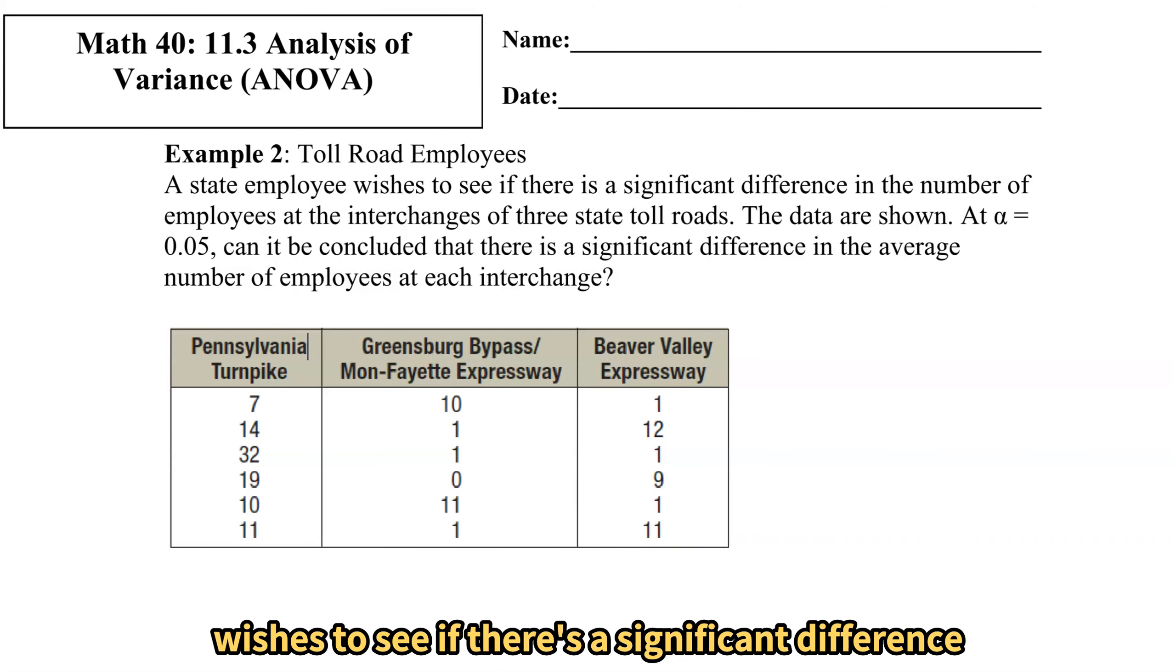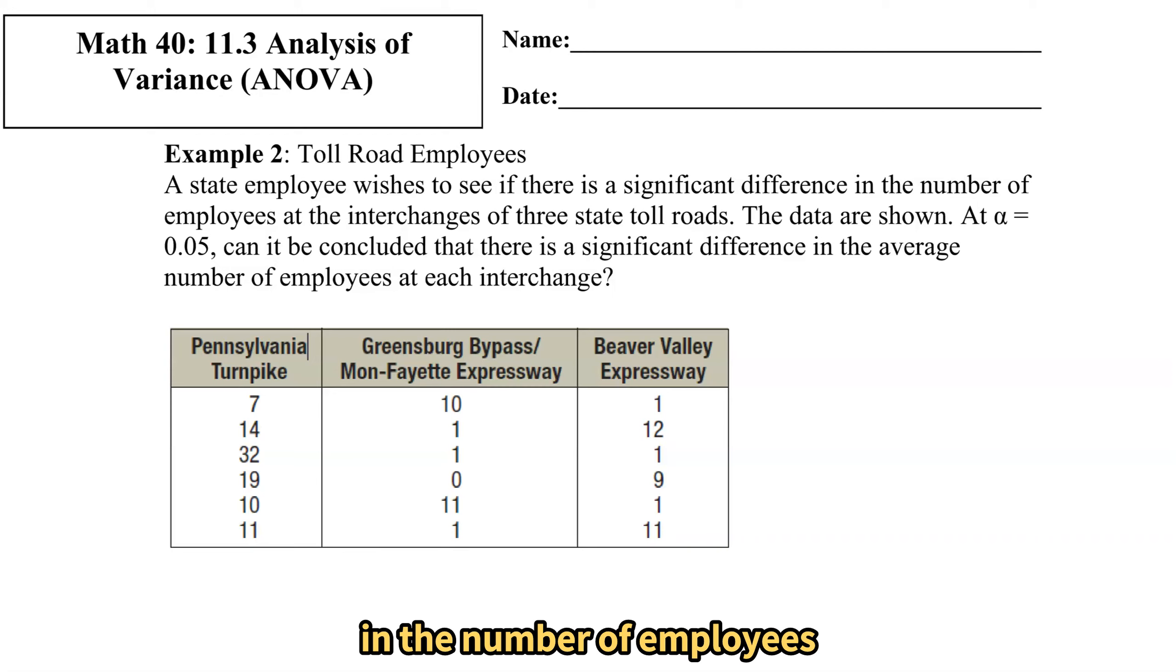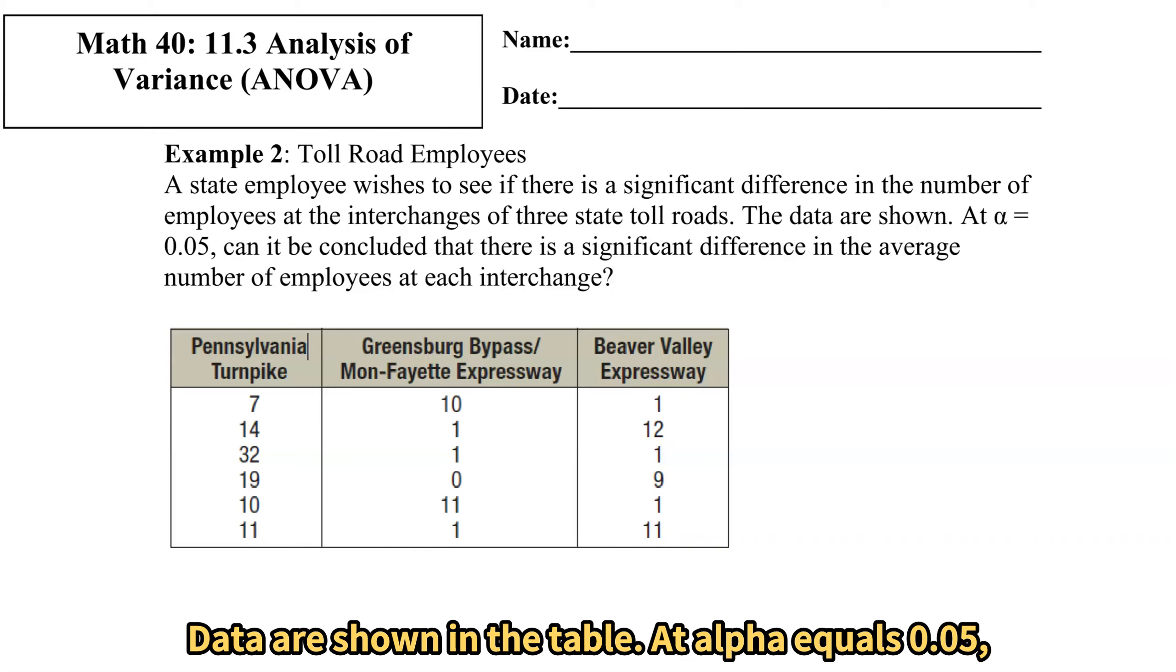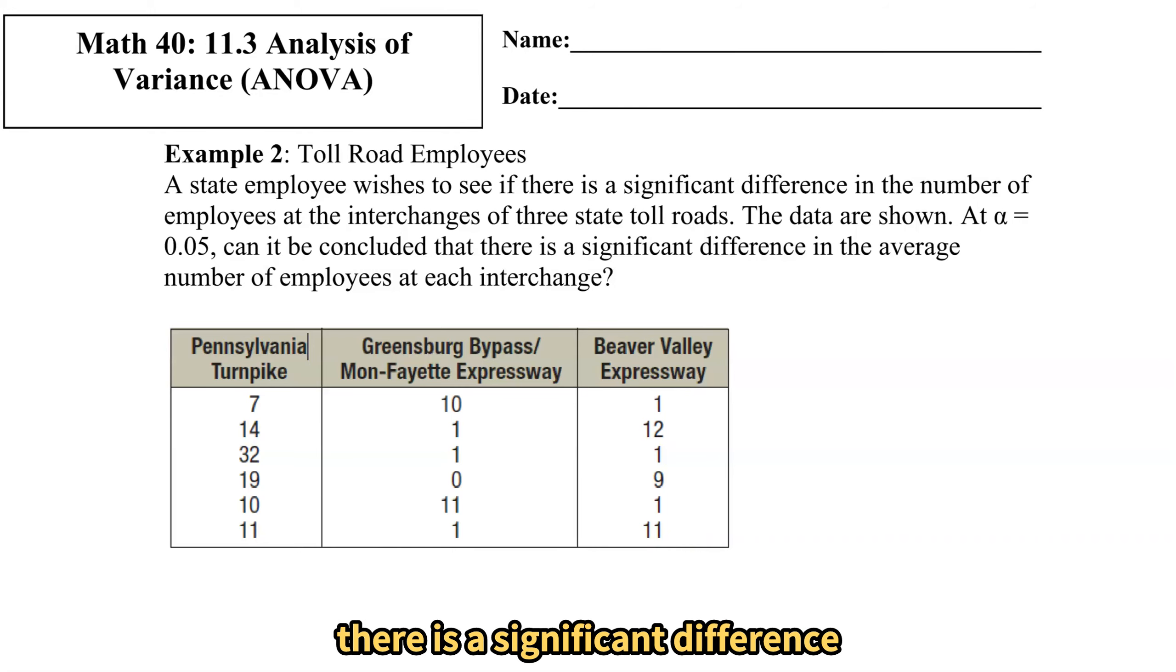A state employee wishes to see if there's a significant difference in the number of employees at the interchanges of three state toll roads. Data are shown in the table. At alpha equals 0.05 can it be concluded there is a significant difference in the average number of employees at each interchange?